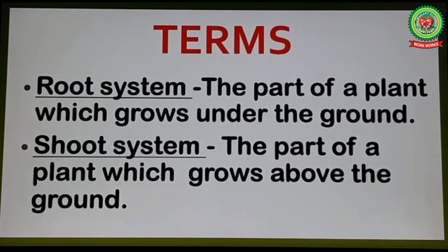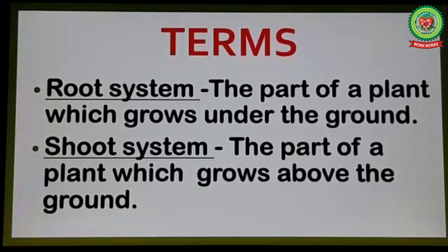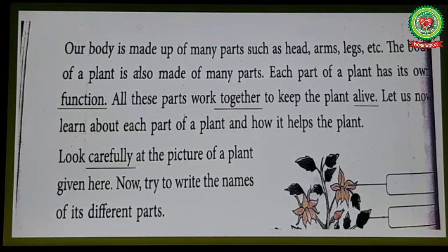Root system: the part of a plant which grows under the ground. Shoot system: the part of a plant which grows above the ground. Now let's start reading. Our body is made up of many parts such as head, arms, legs, etc. The body of a plant is also made of many parts, and each part of a plant has its own function.